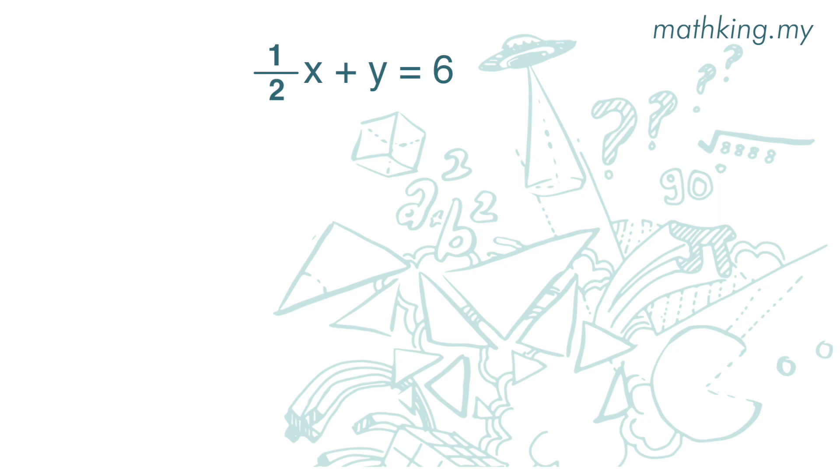Take this example. When x is 0, we plug in the number 0. 1 over 2 times 0 is 0, y is 6. The answer is x is 0, y is 6. So we get the coordinate 0, 6.